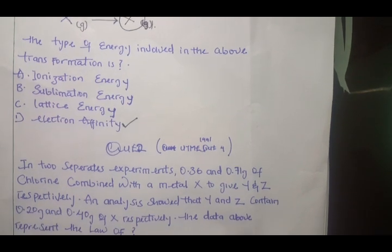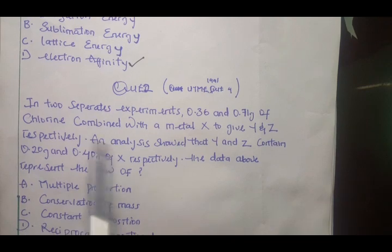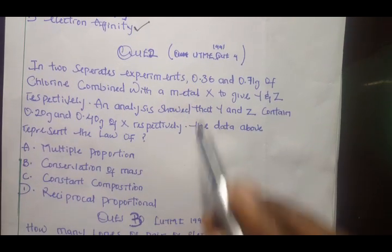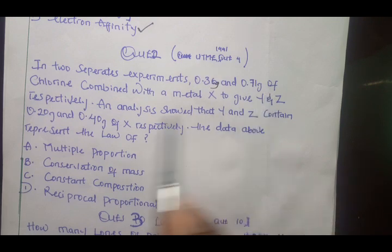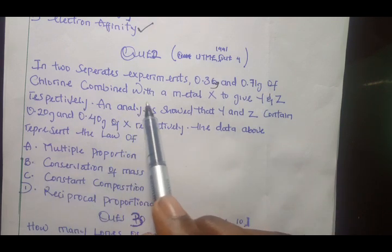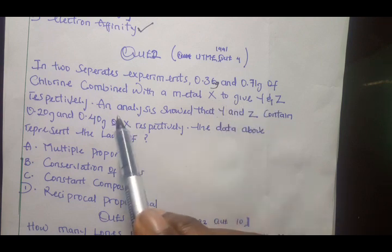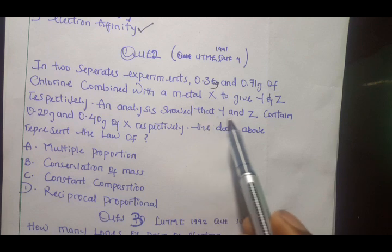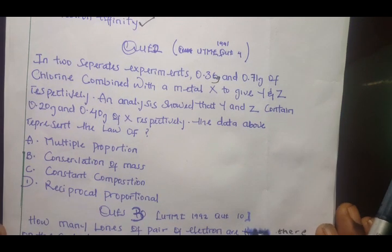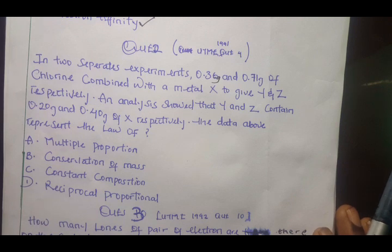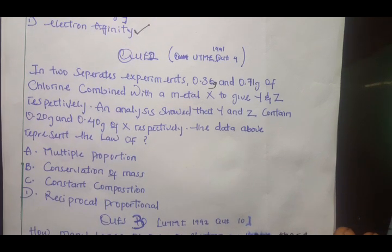Question 2. A structure from 1991 question number 4. In two separate experiments, 0.36 gram and 0.71 gram of chlorine combined with a metal X to give respectively 0.2 gram and 0.40 gram of X respectively. The data above represent the law of dash.